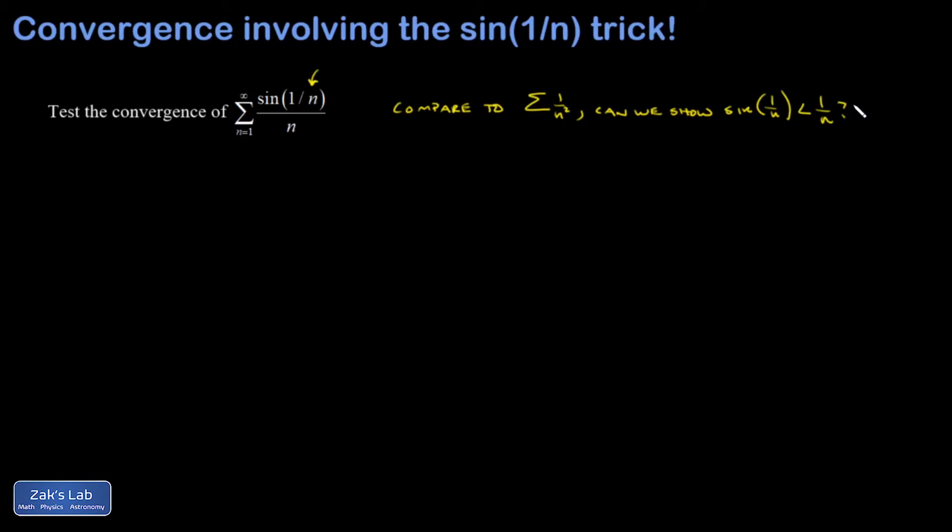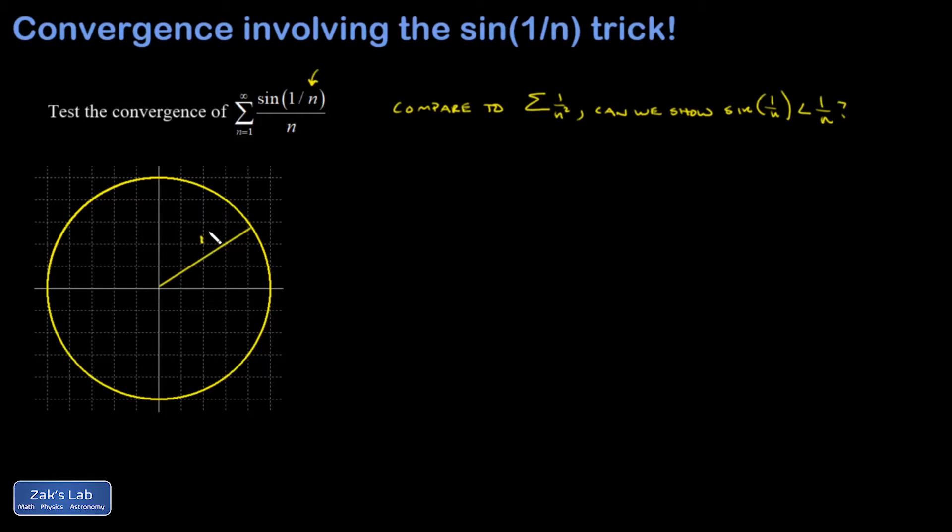This goes back to a geometric construction that normally you see at the beginning of calculus 1. So I'm going to look at a little section of the unit circle. Okay, there's my unit circle. I labeled the radius as having a length of 1.